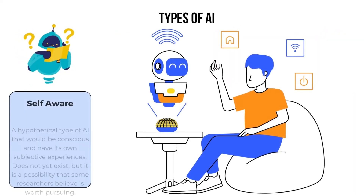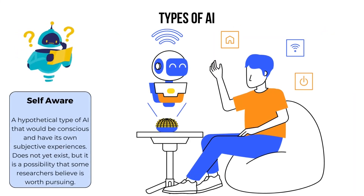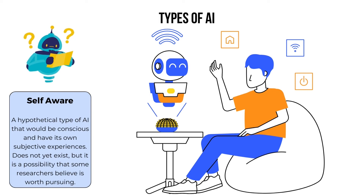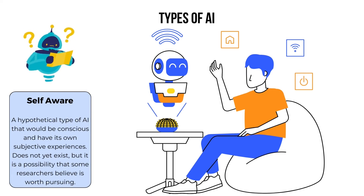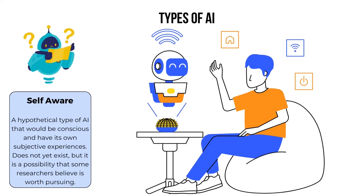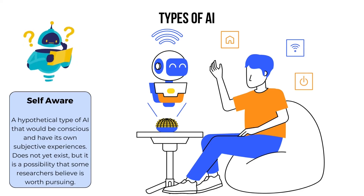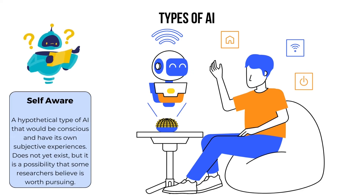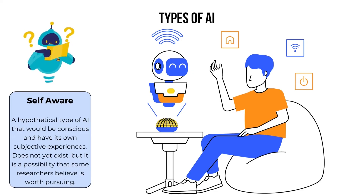Suppose we have a personal robot assistant named Eve. If Eve were a self-aware AI, she wouldn't just follow pre-programmed instructions or react to our commands. Instead, she'd understand her own existence and have her own feelings and thoughts.